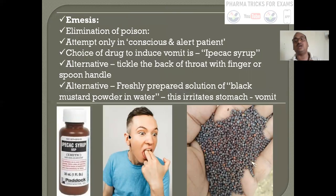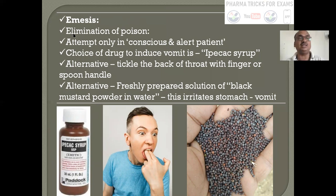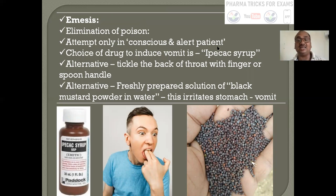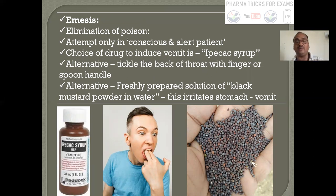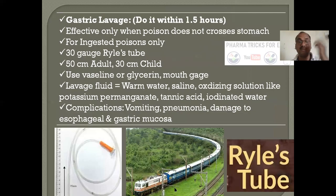Emesis: when the patient has consumed poison through the mouth, then only this is possible. If consumed via IV injection or inhalation, it is not possible. Emesis is attempted only in conscious, alert patients — unconscious patients cannot do this. The choice of drug to induce vomiting is ipecac syrup — very important. Alternative is a tickle with a finger or spoon handle to the back of throat. You can also use finely powdered black mustard, which also causes vomiting.